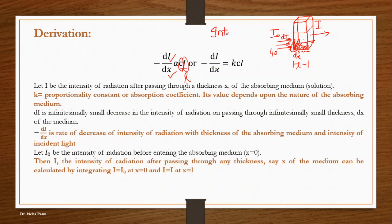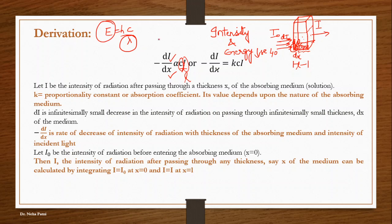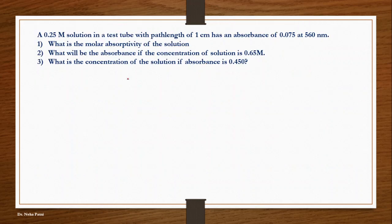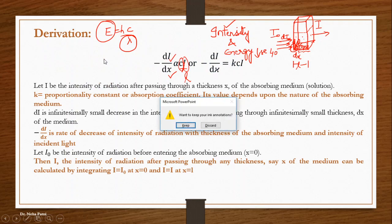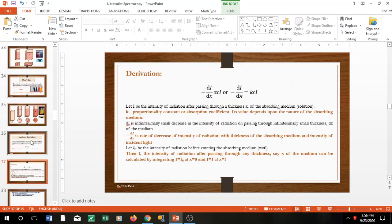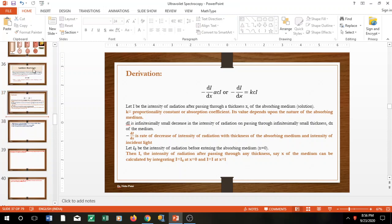You need to be clear about the difference between intensity and energy. I am not saying energy is decreasing. Energy is fixed — E = hc/λ. When I ask a monochromatic radiation to pass, that directly means I have fixed the energy, so energy is not going to change. What is going to change is intensity — the number of photons striking a particular area.